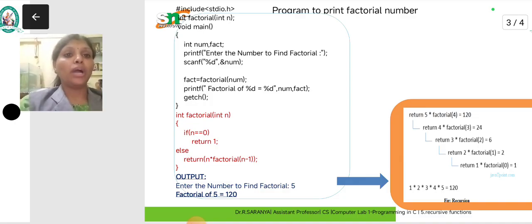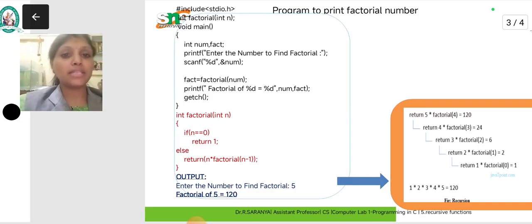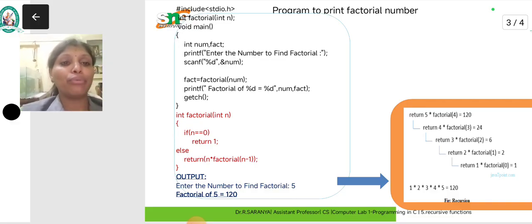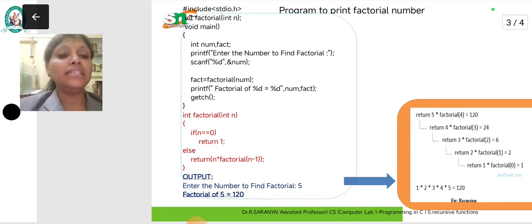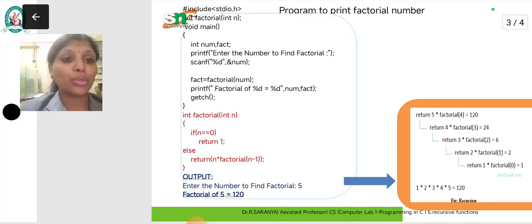So automatically factorial function goes to the function which we define here below the main function. Int factorial of int n. If n is 0, you have to return the value 1, else return n into factorial of n minus 1.